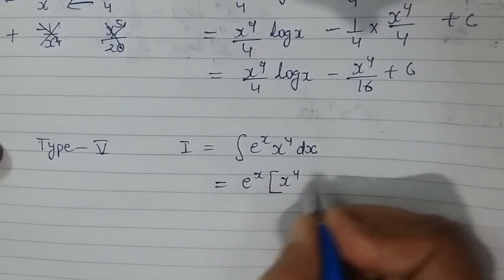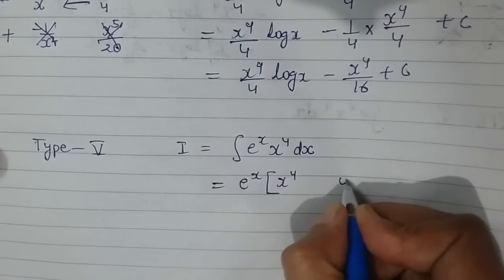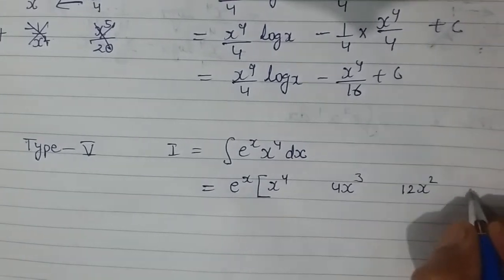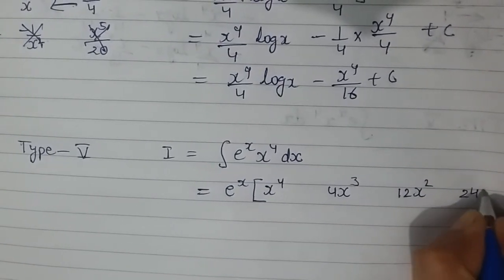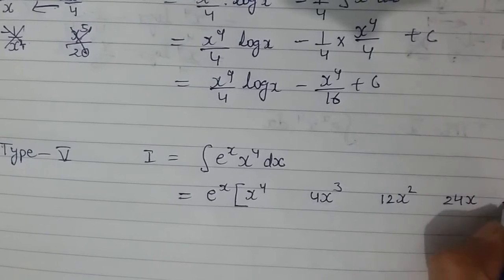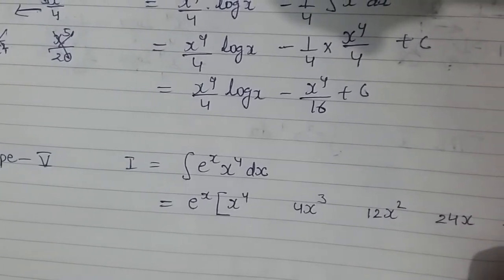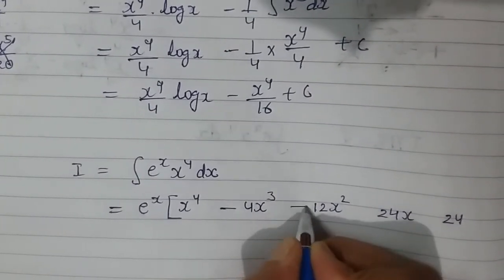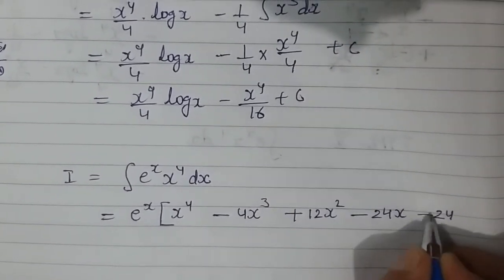So this is x power 4, then differentiation of this is 4x cube, differentiation of this is 12x square, differentiation of this is 24x, differentiation of this is 24, and differentiation of this is 0, so no need to write that. This will be positive, this negative, this positive, negative, positive.